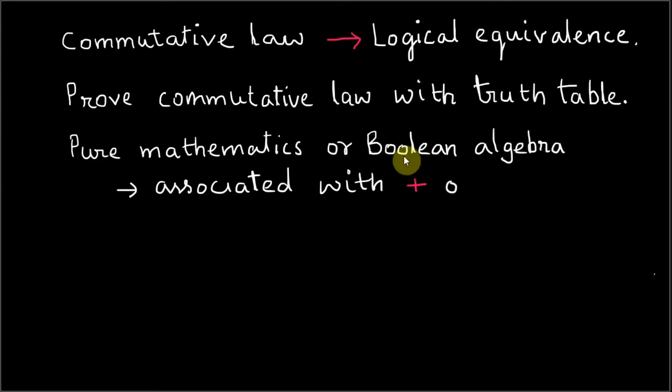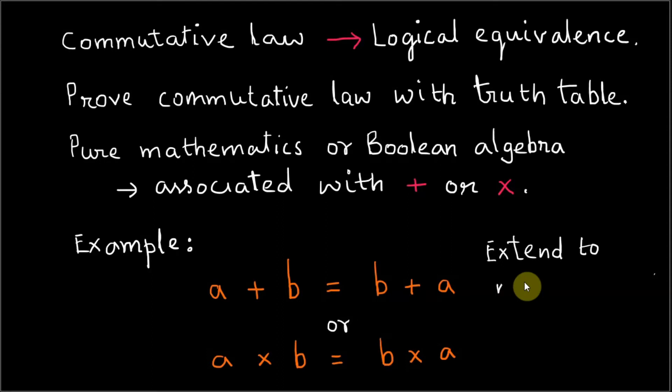For example, a plus b equals b plus a, or a multiplied by b is equal to b multiplied by a gives the same results. The commutative law can be extended to more than just two variables.